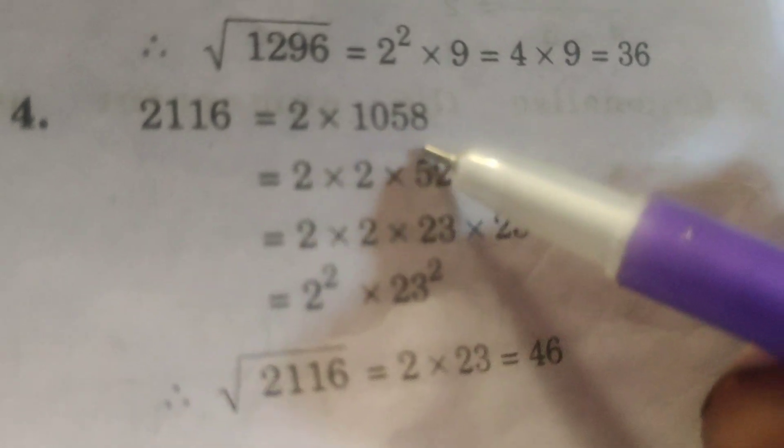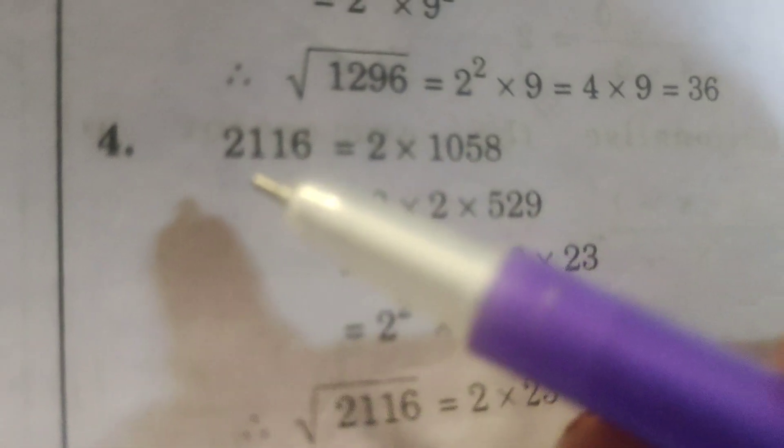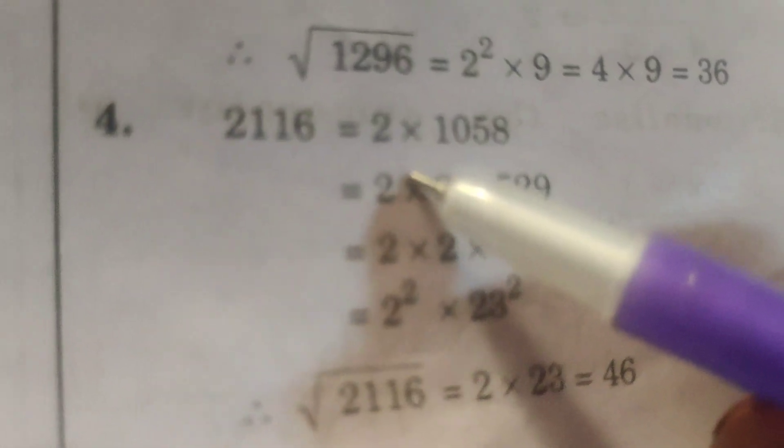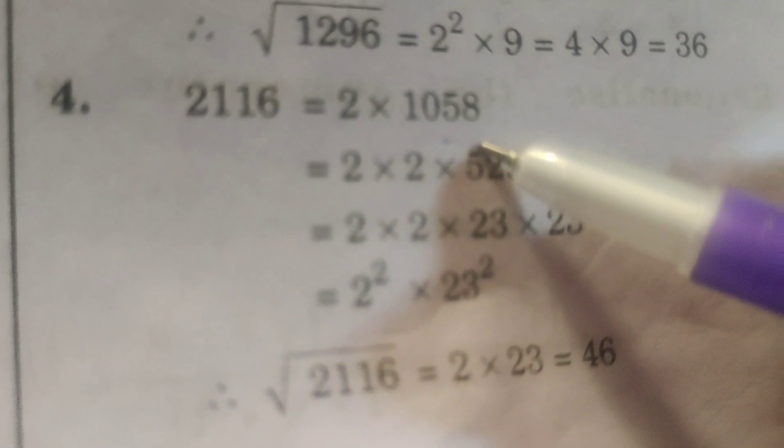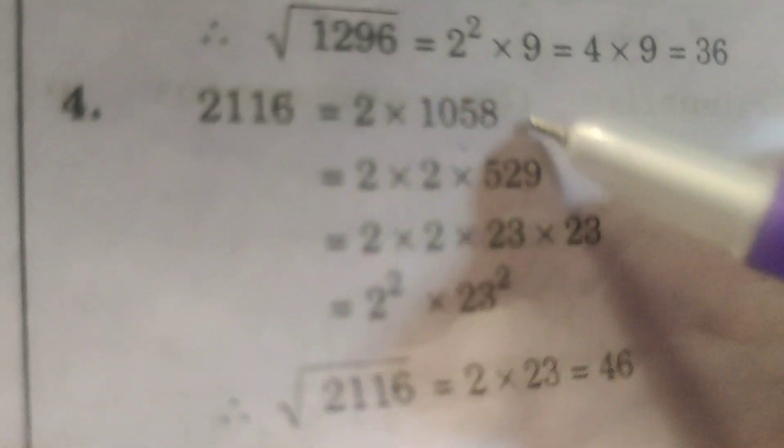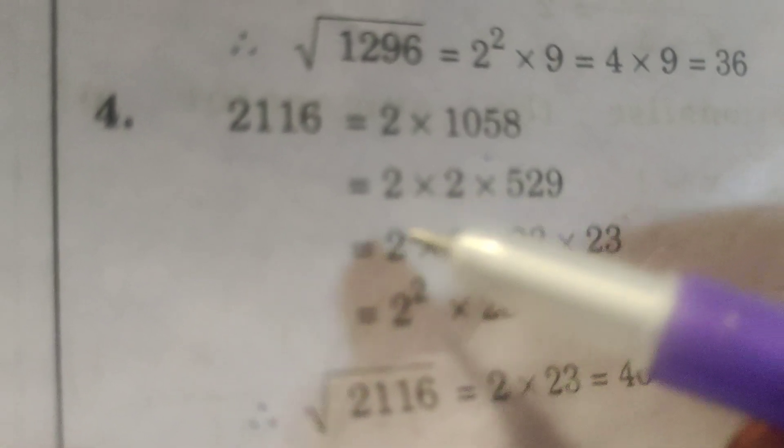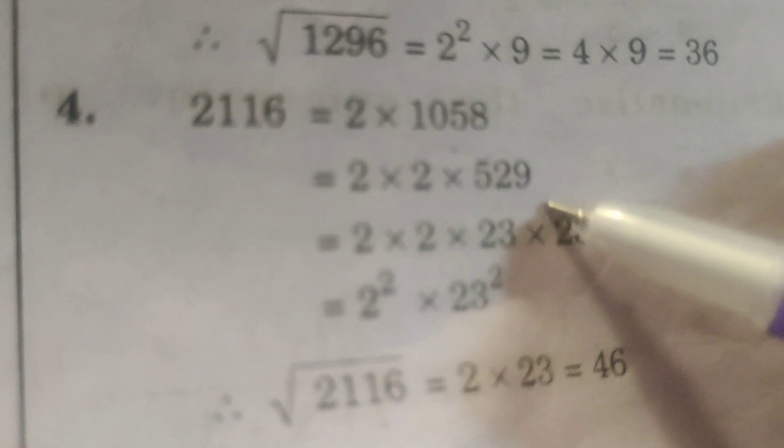Now 2116 divided by 2 is 1058. So splitting 2116: 2 into 1058. Again, 1058 divided by 2 is 529. So 2 into 2 into 529.